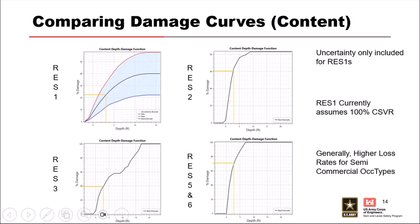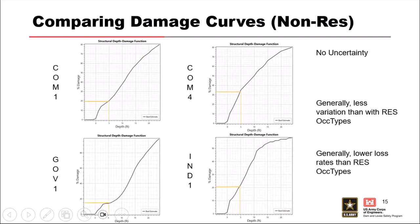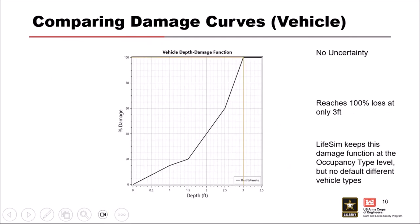For content damage, similarly, uncertainty is only included in the single-family curves. For semi-commercial categories, damages ramp up pretty quickly — possibly because people in single-family homes try to salvage contents more than in commercial areas. For vehicles, the x-axis shows much smaller depths — we assume 100% damage after just three feet of depth, and again, no uncertainty is included in those default curves.